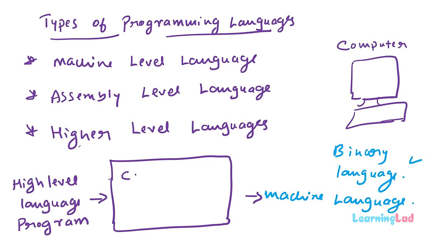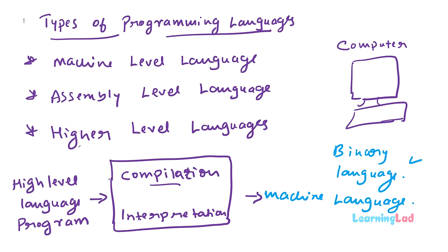The first method is the compilation method, where a program called a compiler is used. The second method is called interpretation, and for this method a program called an interpreter is used. Although these are two different methods, what they both do is convert the program written in a high level language to machine level language which the computer can understand and execute.